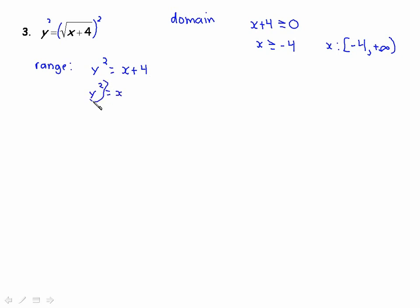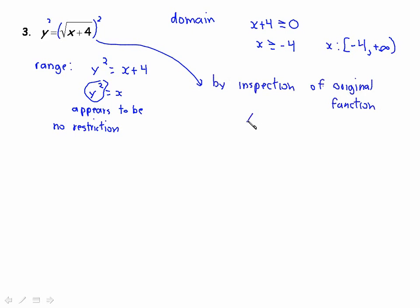Because when I look at this, when I isolate x, by inspection, there appears to be no restriction. You can square anything you want. There's no square root there. There is no denominator. However, by inspection of original, we have to watch what we're doing. Because this is what we were given. y equals the square root of x plus 4. And this is the positive root of x plus 4.